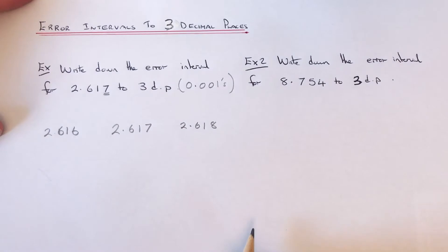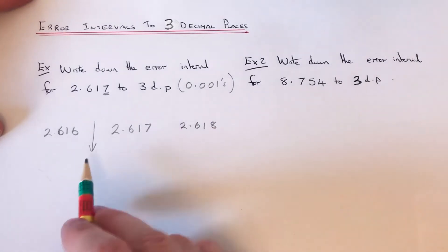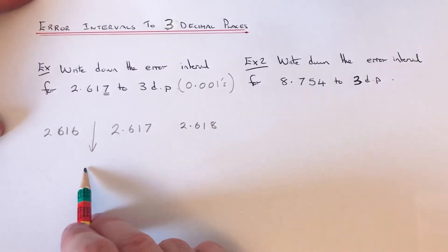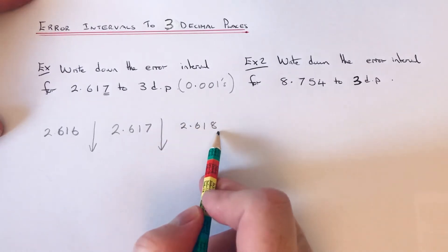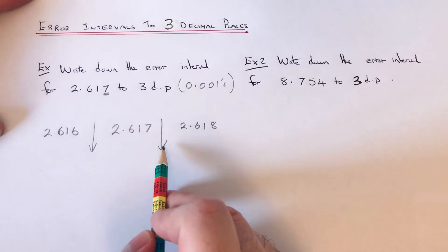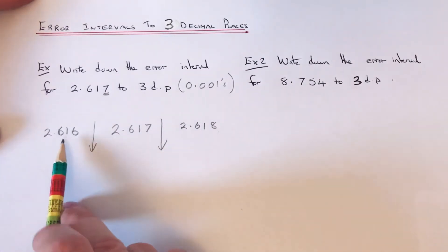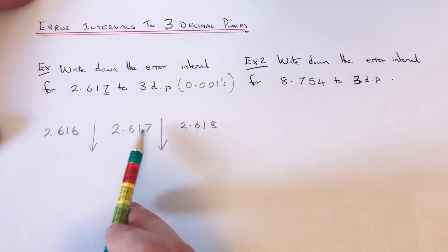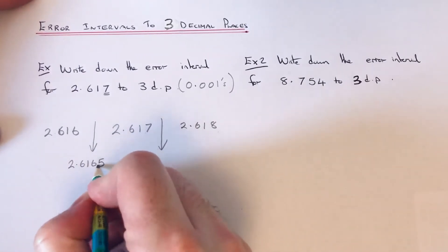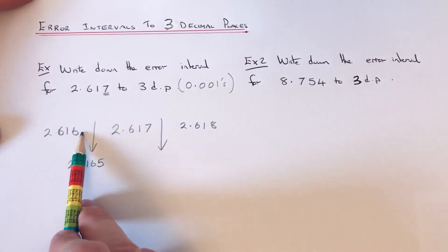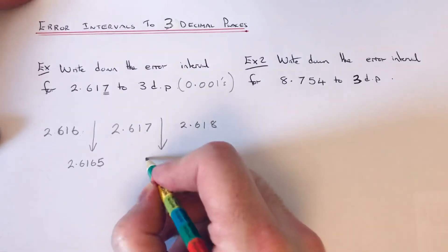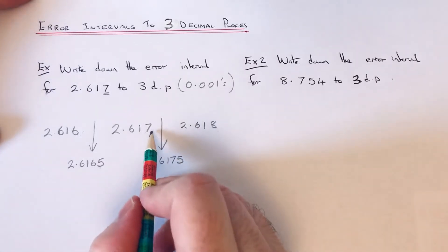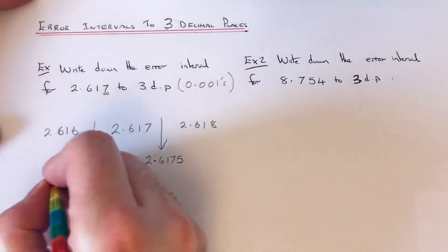Now we need to go halfway between 2.616 and 2.617 — that gives us the lower bound, which is the lowest number that the number could be. We also need to go halfway between 2.617 and 2.618, which is the upper bound — the highest value our number could be. Halfway between 2.616 and 2.617 is 2.6165, and halfway between 2.617 and 2.618 is 2.6175. Notice you just need to put a five on the end to get the halfway number.